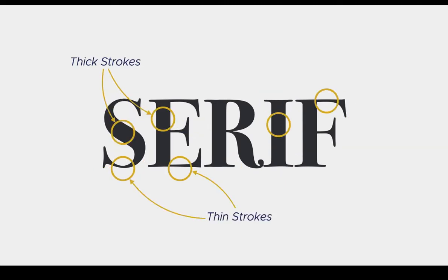Something else that serif fonts have — most of them have this variation in weight. So you have pretty thick strokes, like the middle of the S and the vertical line in the E, but you also have very thin strokes, like the top and bottom of the S and the horizontal lines in the E. Every letter shows some kind of variation going on between the strokes. That's a characteristic that is usually present on serif fonts.